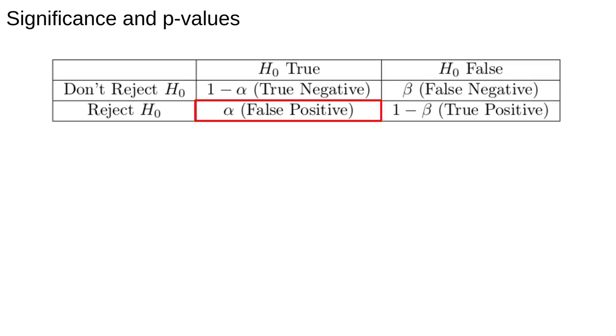If the null hypothesis is true and we reject it, that's a false positive. We've said there's an effect when there isn't. The cells give the probabilities of each of the four scenarios.